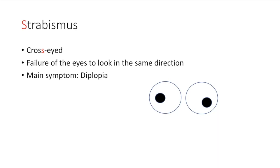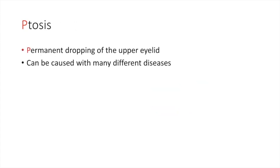Strabismus is a visual deficit of misalignment — a failure of the eyes to look in the same direction simultaneously, caused by weakness in the nerves stimulating the muscles controlling eye position. Someone with this condition usually has cross-eyes or diplopia. Ptosis is a permanent drooping of the upper eyelid.